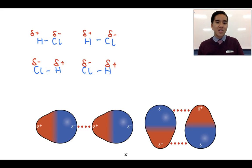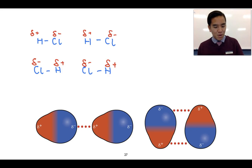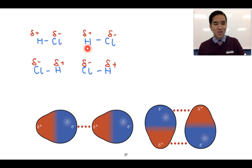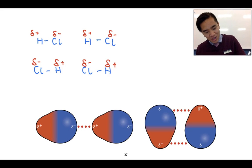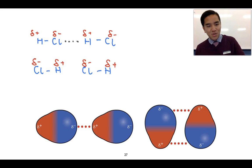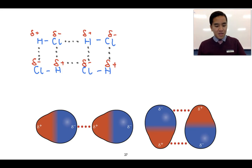A dipole-dipole interaction forms when the partially negative end of one polar molecule becomes attracted to the partially positive end of an adjacent molecule — like this hydrogen here. We can show this interaction, and it can also form in various areas between the other surrounding molecules, so you can see the extent of these dipole-dipole interactions and how they can form.